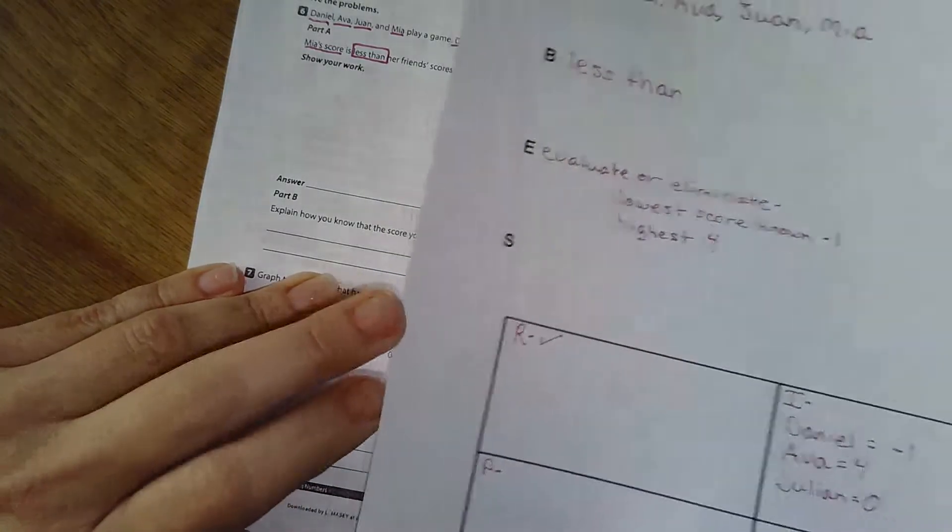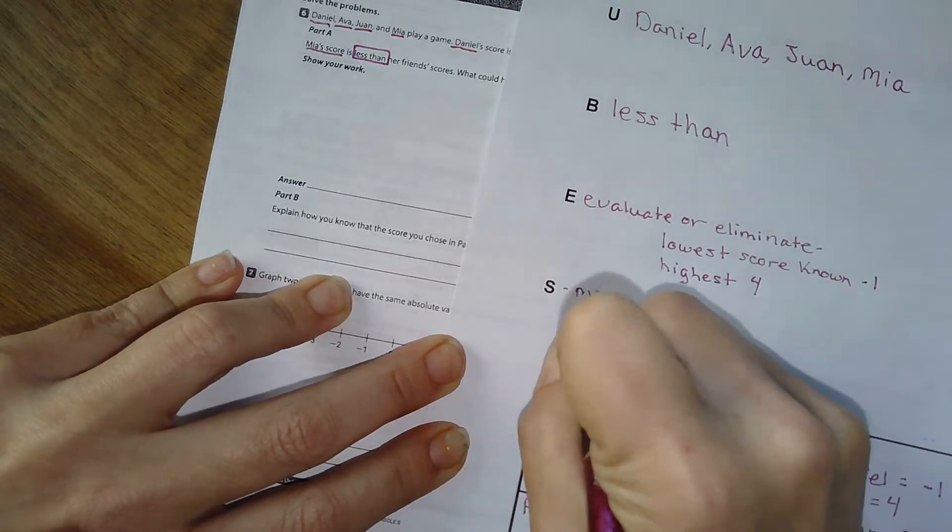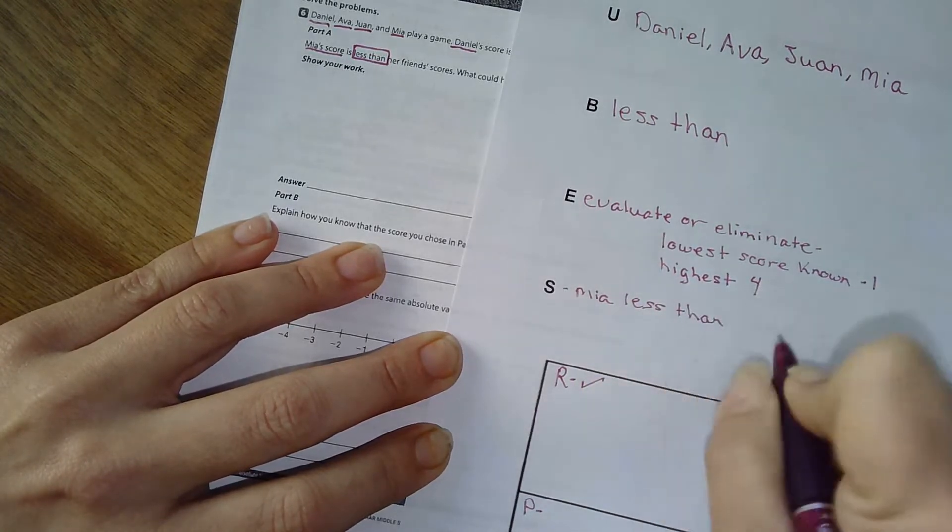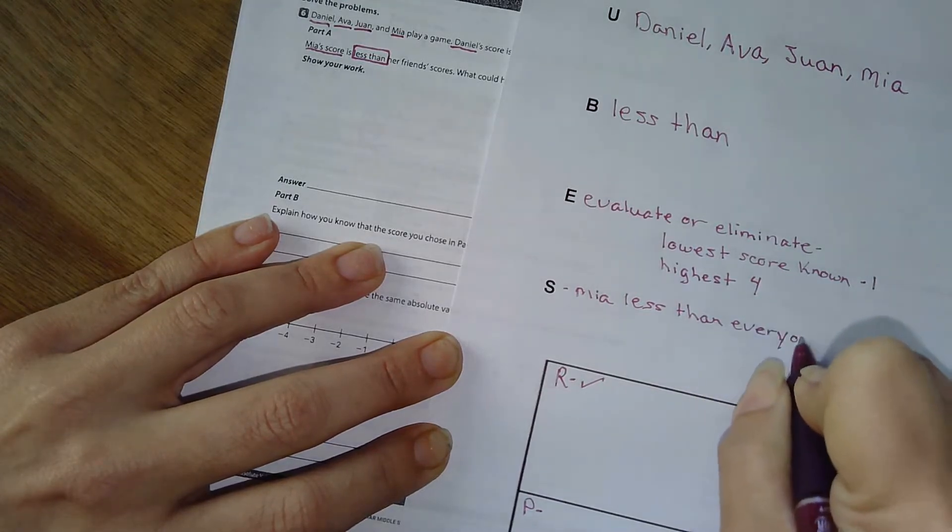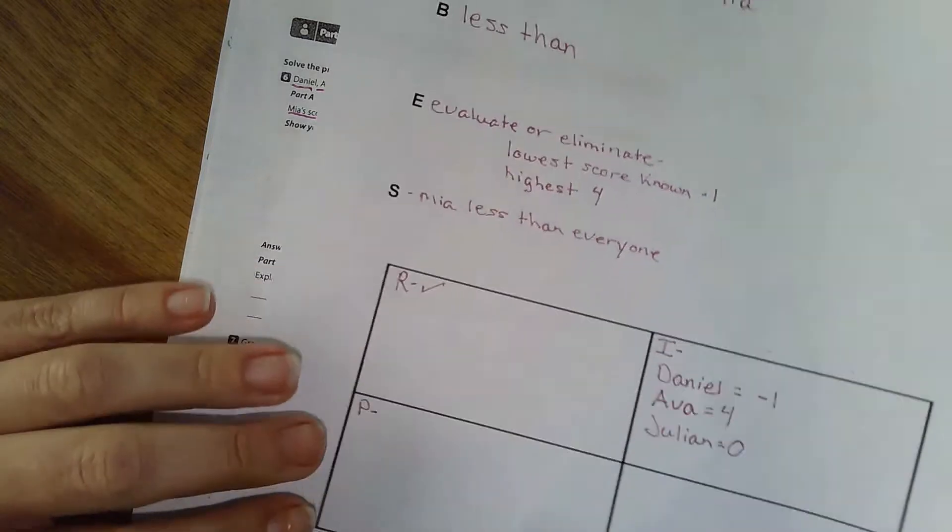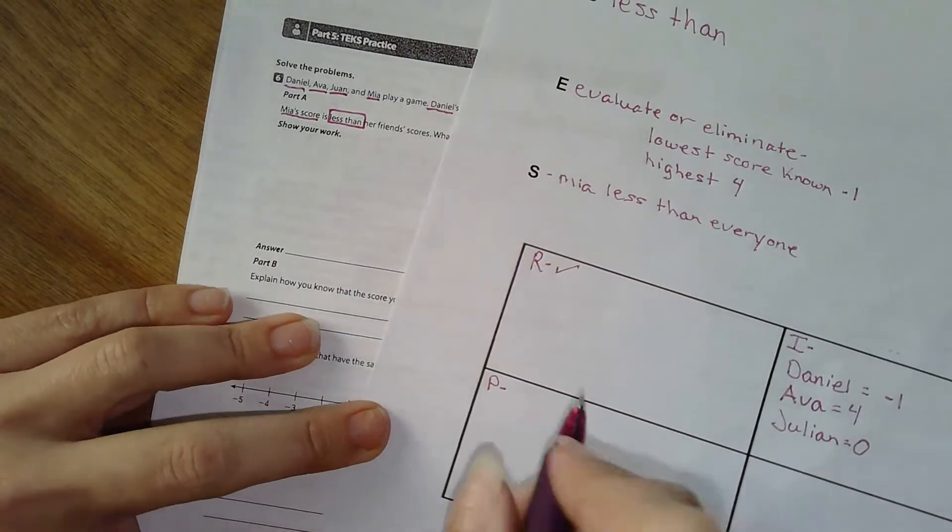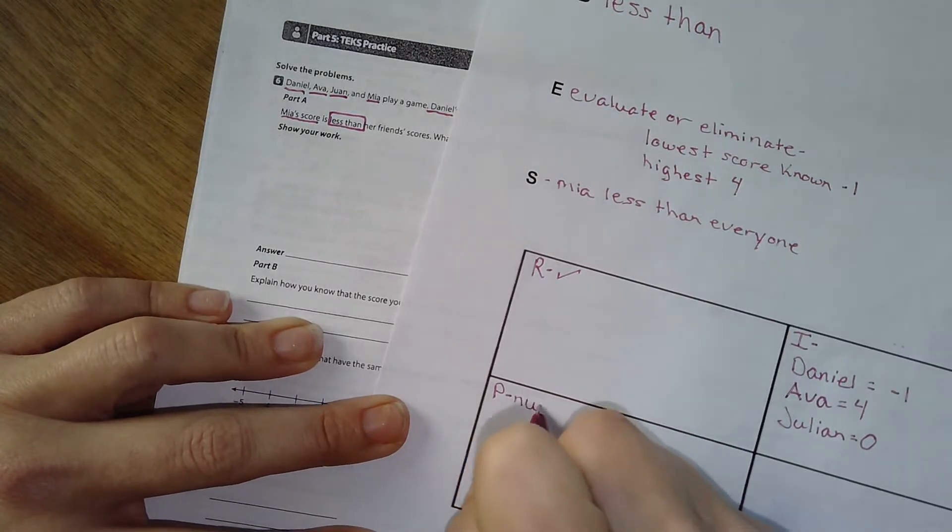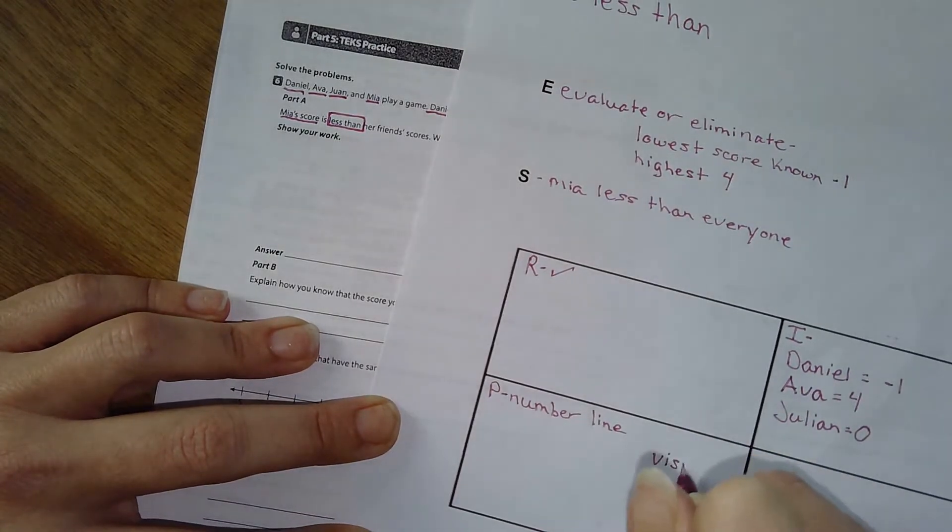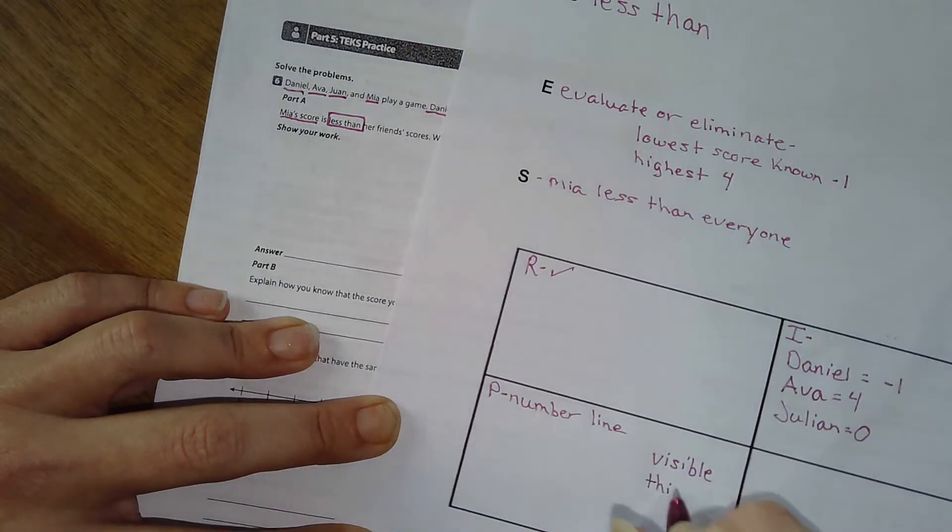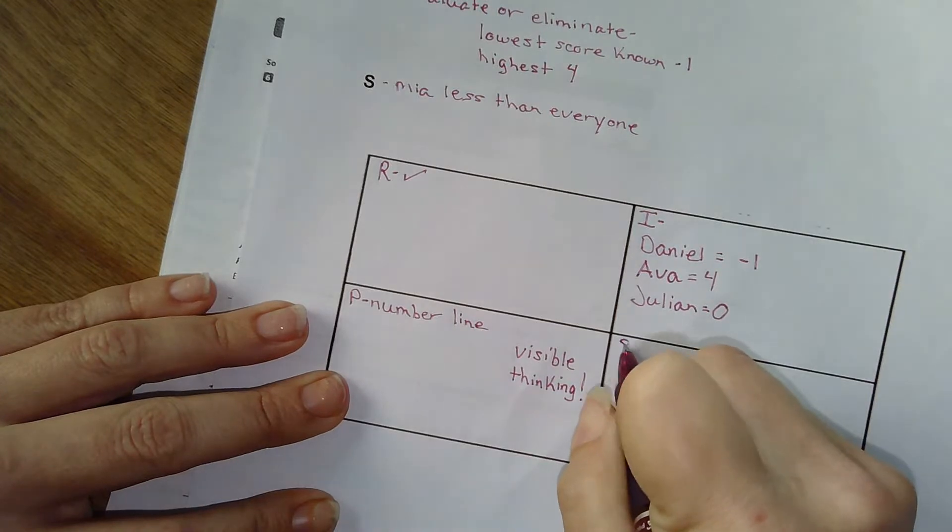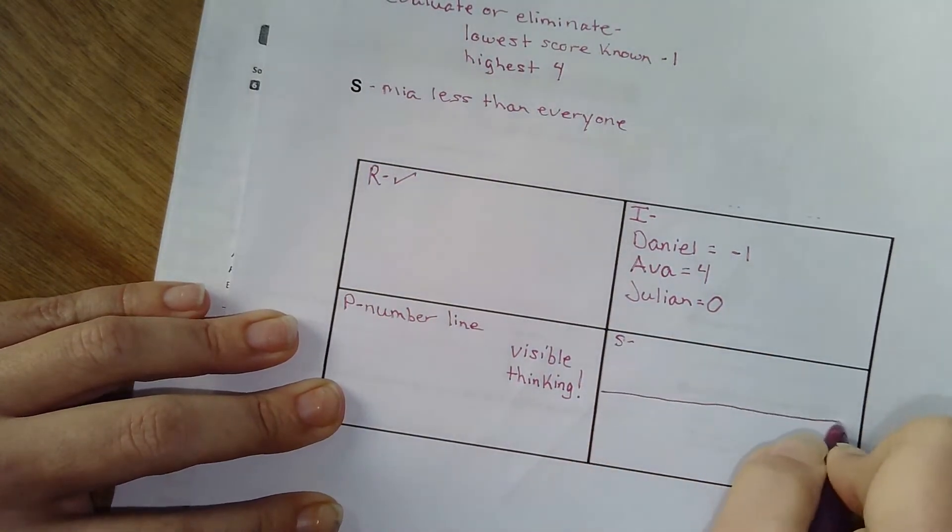And to solve it, I need to find Mia and that she needs to be less than everyone, right? Because it says that her score is less than her friend scores. And that includes all of the friends she's playing with, right? Okay. So my plan, I'm thinking I need to show a number line. I always use visible thinking. I always show my work. And now I'm going to solve it. Well, you know what? I might be able just to put it right here, right? Solve it.